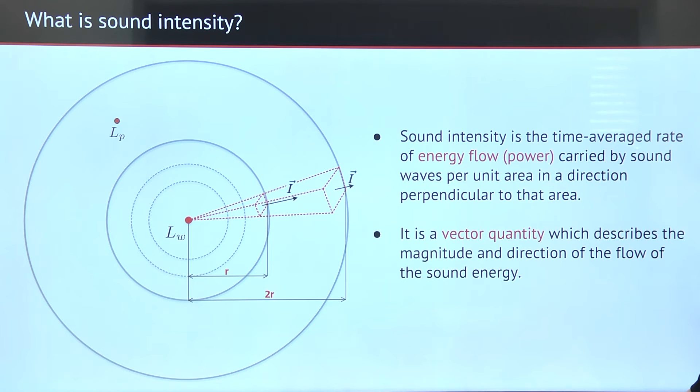In ideal free field situations like the one shown in the image, the vector of sound intensity always points radially away from the sound source, but in real life setups sound intensity is a more complex function of point in space.